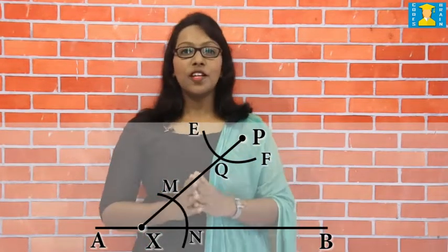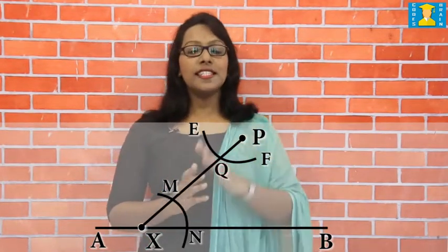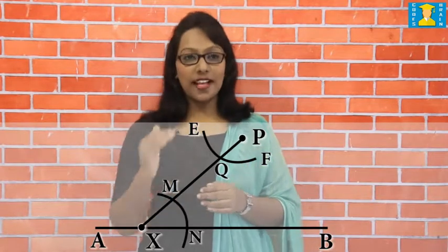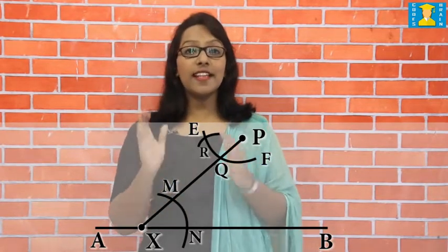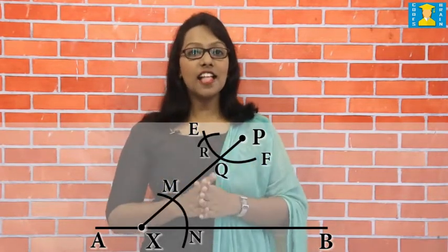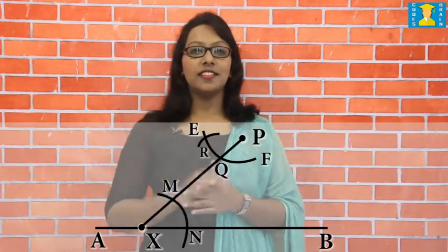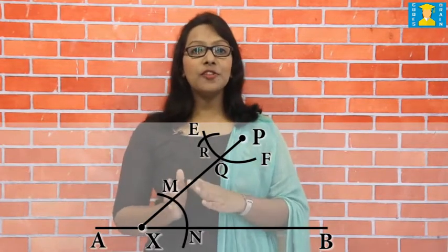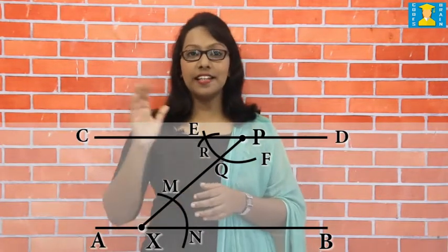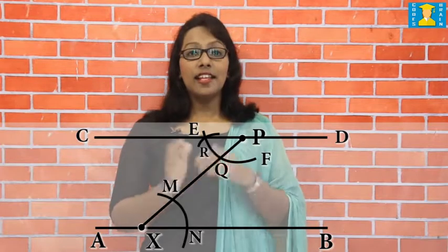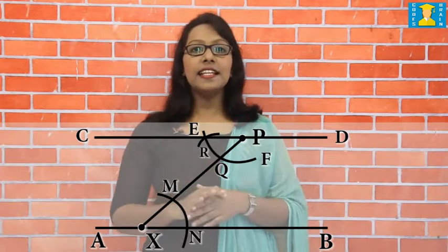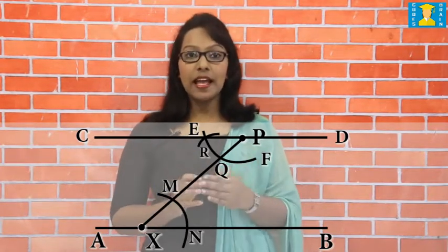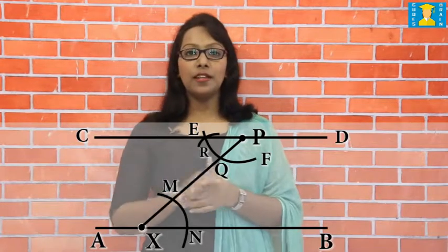Step 3: with P as center and the same radius as before, draw an arc cutting the arc EF at R as shown in that figure. Step 5: join R and P to draw a line segment CD. The line segment CD is the required parallel to the line segment AB and passes through the point P.